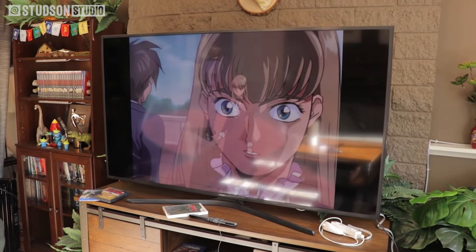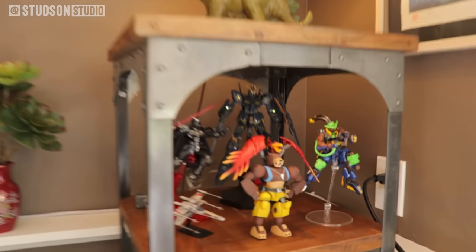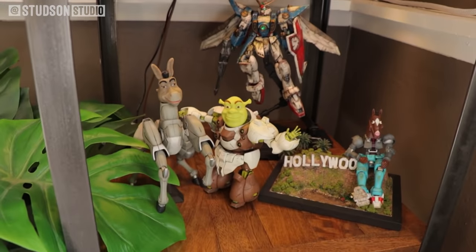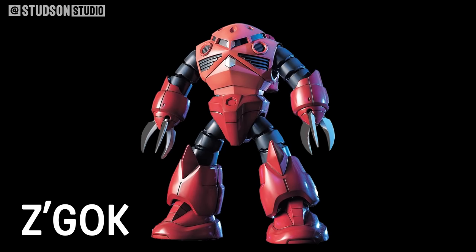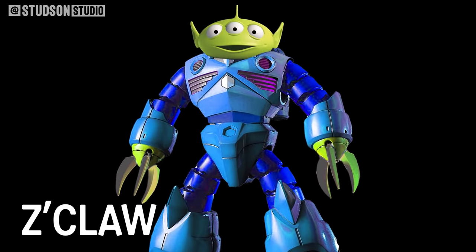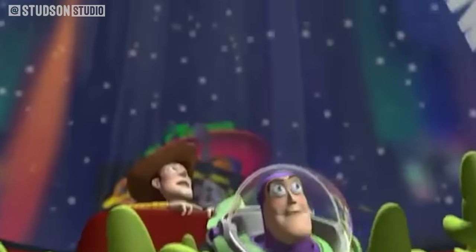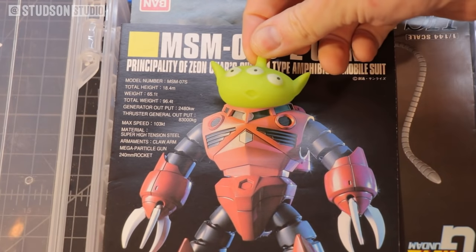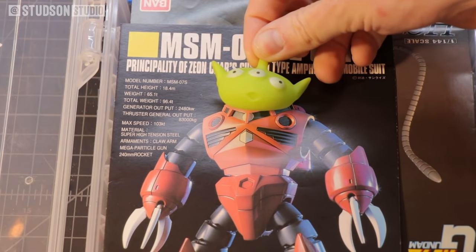Since then I haven't really watched much more Gundam, but I'm still a fan of the model kits and kitbashing them into something else. I chose this particular mobile suit called Zagak because I love the claws on each of its arms. And if you've seen Toy Story, you know that the aliens worship the claw. So yep, that's the concept. Why desire the claw when you can become the claw?